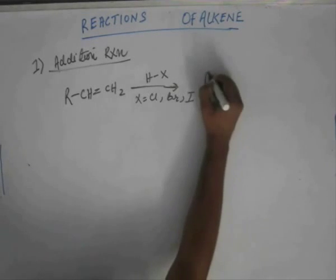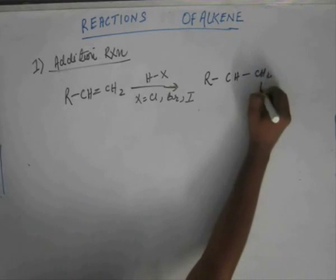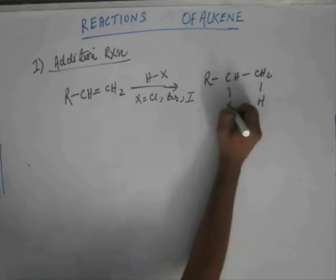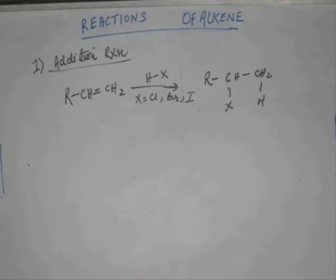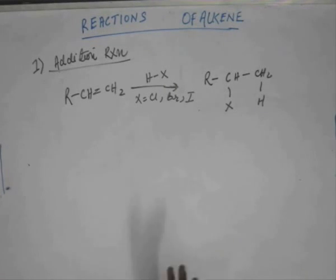When we take HX, we get an addition product. Hydrogen and X get added such that X generally occurs on the inner carbon — on a 2° carbon or preferably a 3° carbon — for reasons that will be clear when we see the mechanism. This is how we write the product.